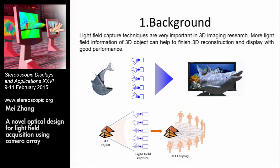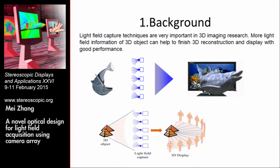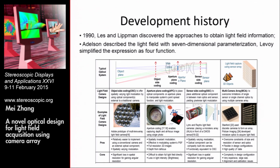With the development of 3D imaging, light field capture techniques have received considerable attention in recent years. More light field information of 3D objects can help to finish 3D reconstruction and display with good performance. Early in the last century, researchers discovered approaches to obtain light field information, and subsequently the light field was described with seven-dimensional parameterization, later simplified as a full function.